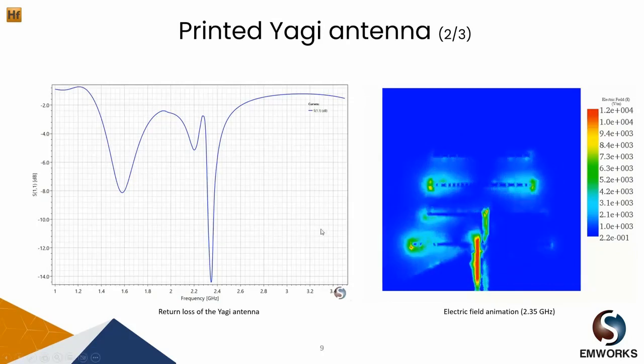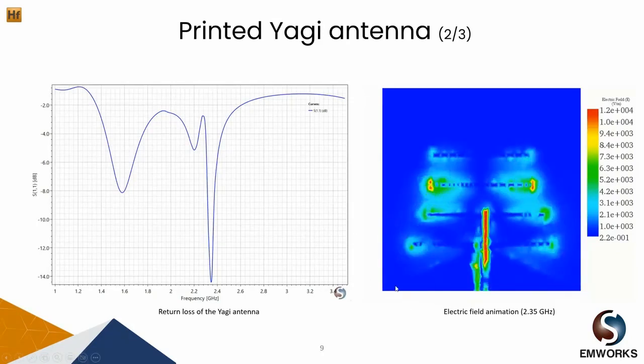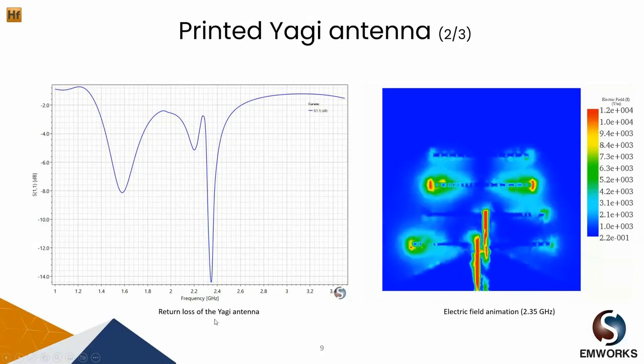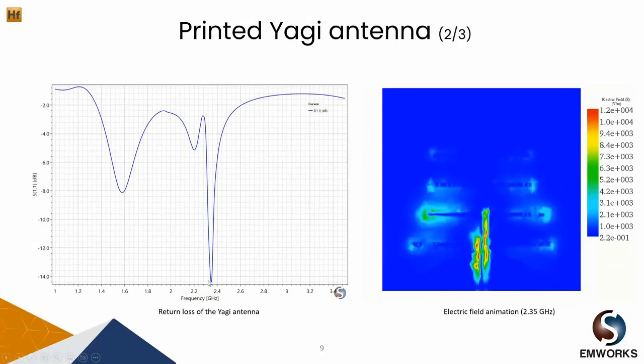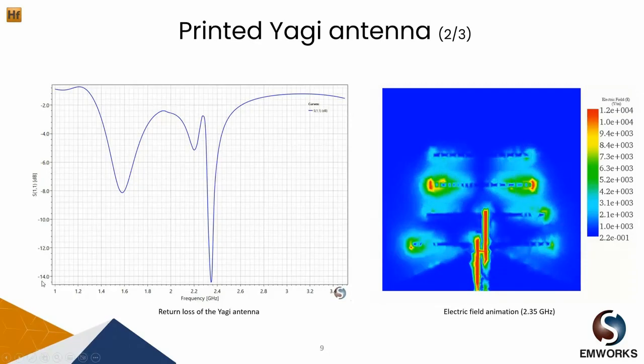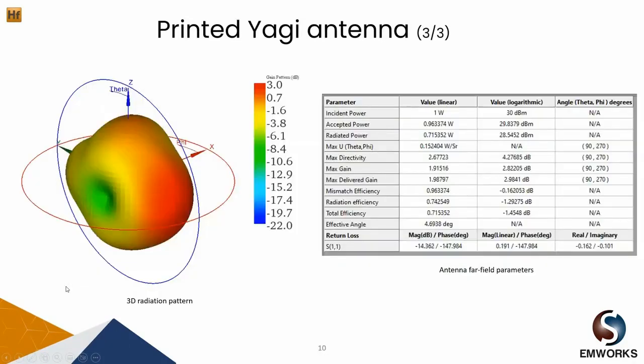So let's look at some of the simulation results. On the right we can see an animation of the electric field. Looking at the return loss, we can see that the antenna resonates at almost 2.35 GHz with a reflection coefficient of almost minus 14 dB. In HFWorks we have what we call the antenna far-field results table. In this table we can see different antenna parameters such as maximum directivity, maximum gain, radiation efficiency, and total efficiency. For our antenna, it has a maximum gain of almost 3 dB and total efficiency of 71 percent.